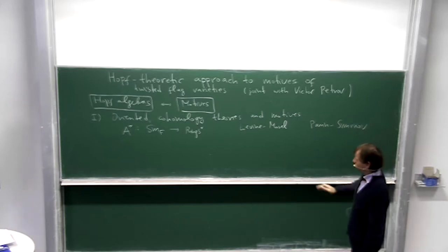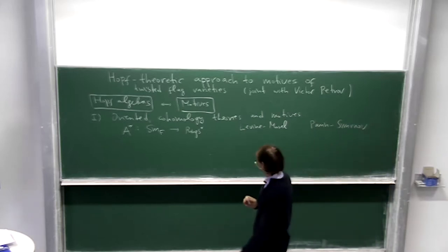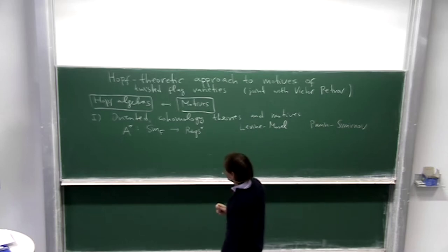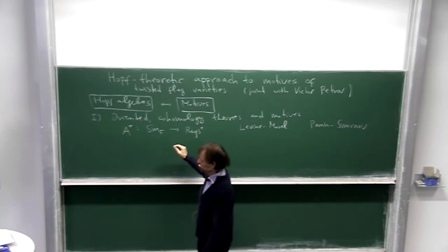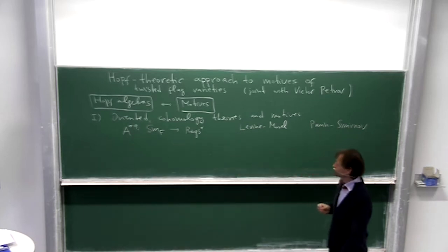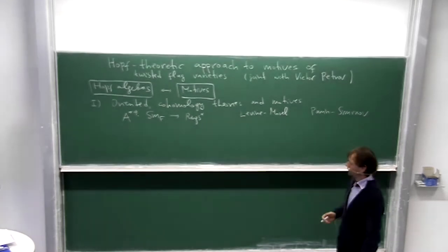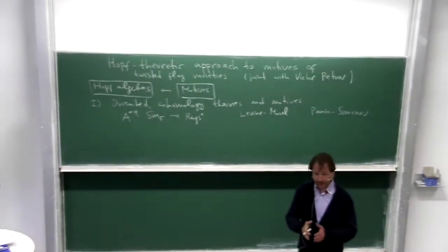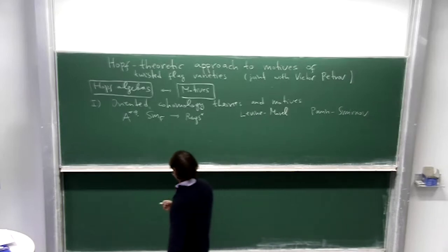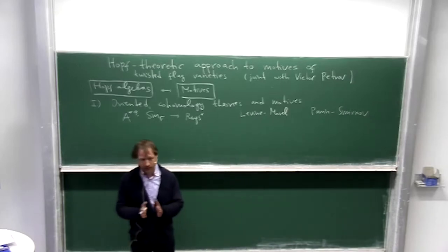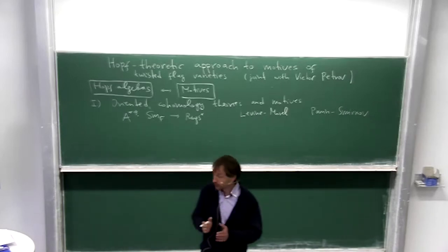I will follow an approach of Levine and Morel. So we have a contravariant functor from the category of smooth varieties to the category of rings, and this functor should satisfy some list of axioms. Well, this list is actually not so long but it's also not so short.